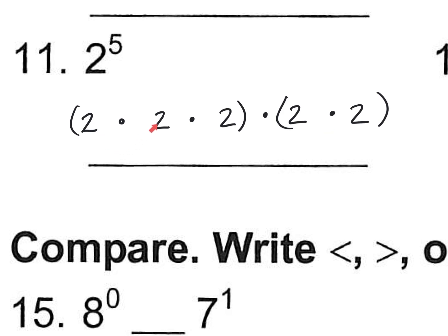So we'll do 2 times 2 is 4. 4 times 2 is 8. So this whole group up here is worth 8. And then 2 times 2 is 4. So really what we're doing is 8 times 4, which makes 32. So 2 to the 5th power is 32.